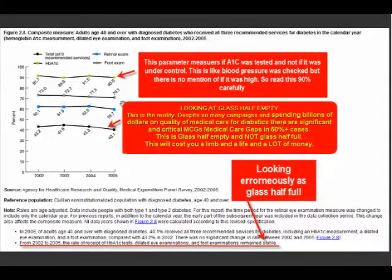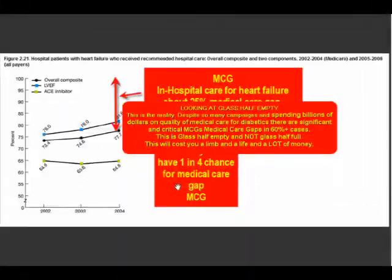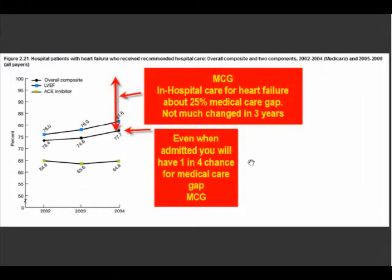Just as you may believe you are among the 40% getting adequate care, everybody else believes the same thing — so there has to be somebody who is not getting care for these parameters. This gap in medical care leads to hospital admissions and excessive expenditure. Data shows that even when you are admitted with heart failure, there is a 25% chance you will not get the care you should be getting. The best strategy is to remove all medical care gaps so you don't have to go to the emergency room or be hospitalized — and medical care gaps can be removed very easily.